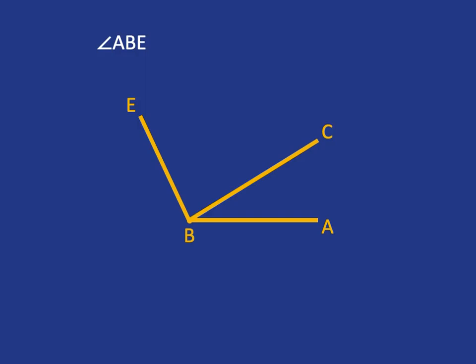One other thing I want us to observe is we can talk about angles as being made up of other angles. If you look here, angle ABE is angle ABC plus angle CBE.